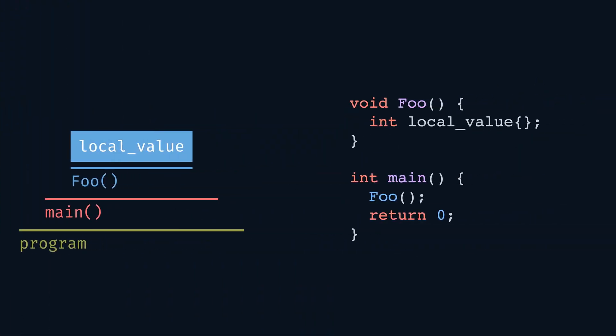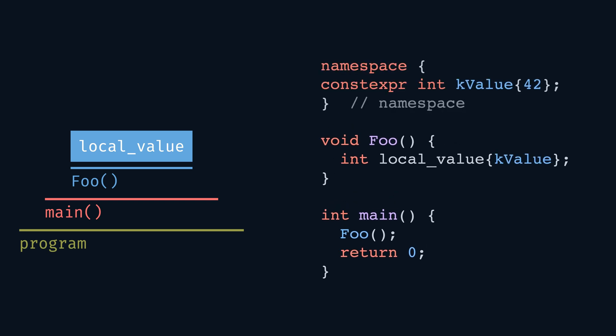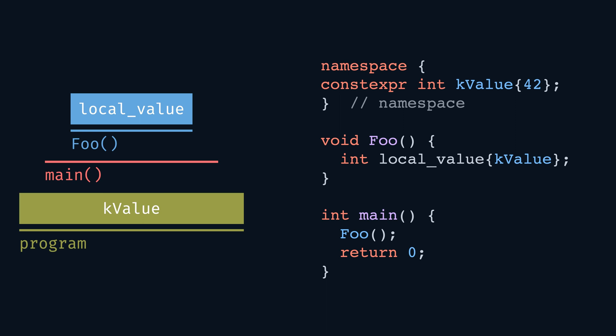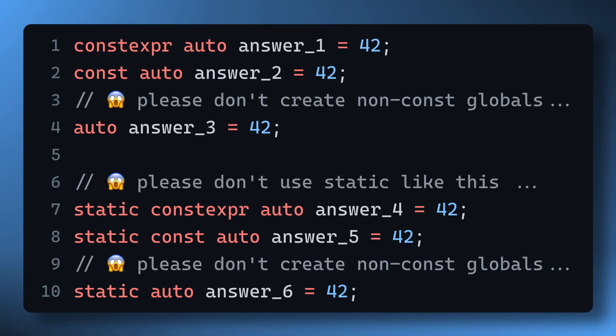Let's extend our example by adding some value kValue defined at namespace scope, and use it to initialize our local value. We will introduce it in an unnamed namespace following best practices, but it could live in any namespace including the global one. The kValue here has what is called static storage duration — it lives for the whole duration of the program. Its data gets allocated at the start and freed at the end of the program. While we can use static for an object at namespace scope to indicate static storage duration, we don't have to, as any such object has static storage duration by default. So all these definitions are equivalent in terms of storage duration.